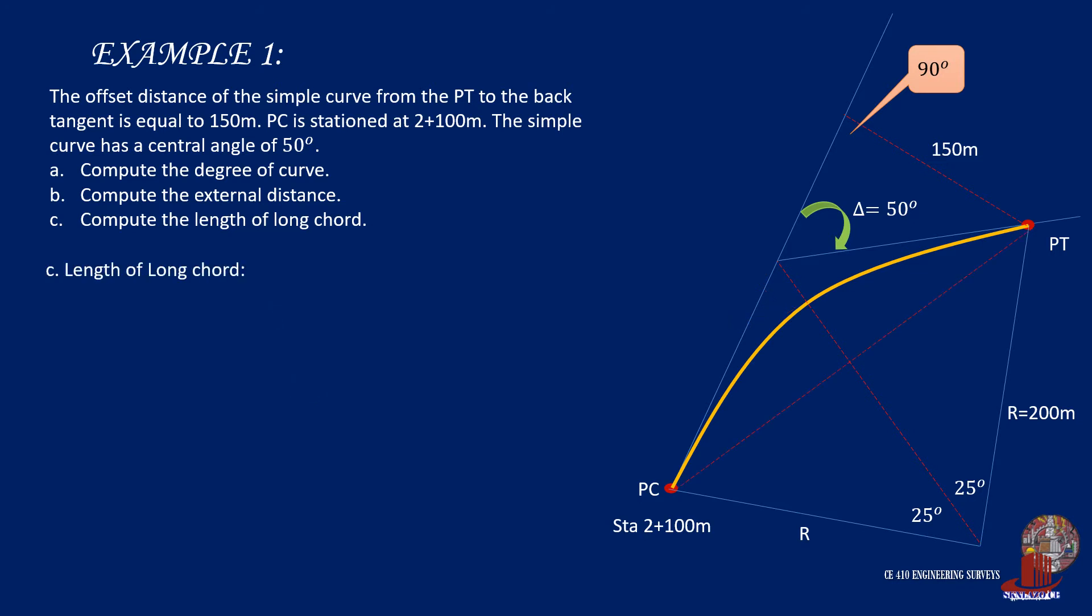Similar with the third requirement of looking for the long cord, since R and delta are already known, we simply plug them into the formula LC equals 2R sine of half of delta, which results in 208.29 meters.